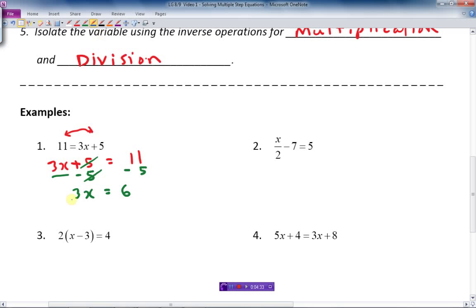And now I want to get rid of that 3. That's the last thing I need to get rid of. And what's it doing to the x? Well, it's multiplying. 3x, there's nothing in between there, that means multiply. So what's the opposite of multiplying? The inverse or opposite of multiplying is divide. So I'm going to divide by 3, but I have to do the same thing to both sides. So I can cancel those 3s out, and I get x equals 2 as my final answer. Again, this is just review, so I'm going to quickly go through these.